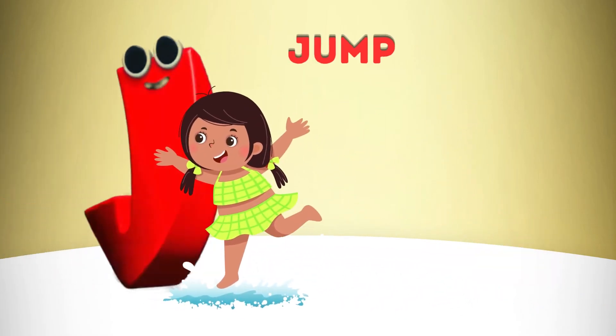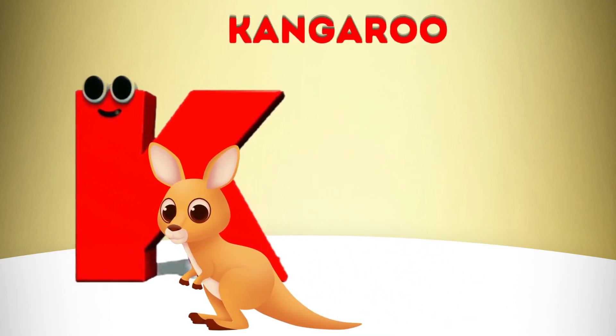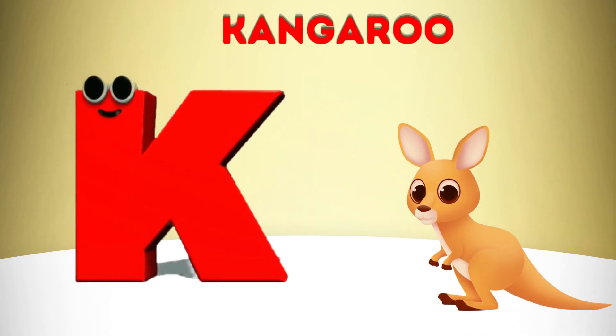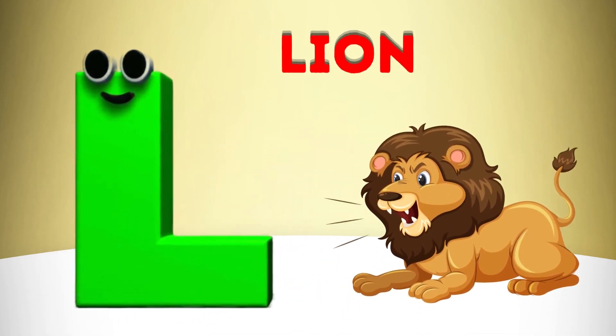J is for Jump, J-J-Jump. K is for Kangaroo, K-K-Kangaroo. L is for Lion, L-L-Lion.